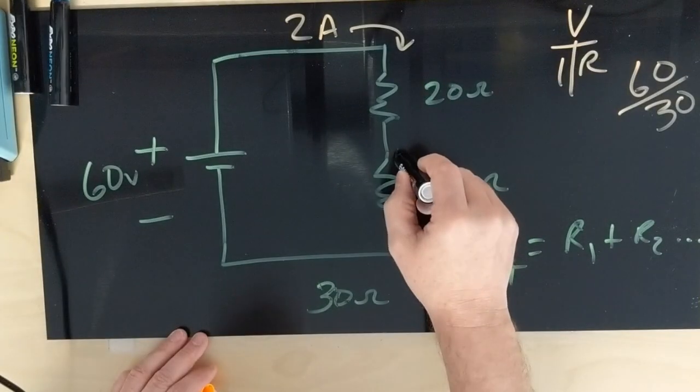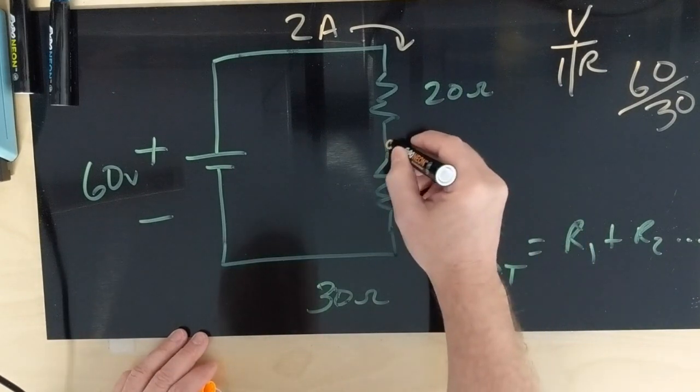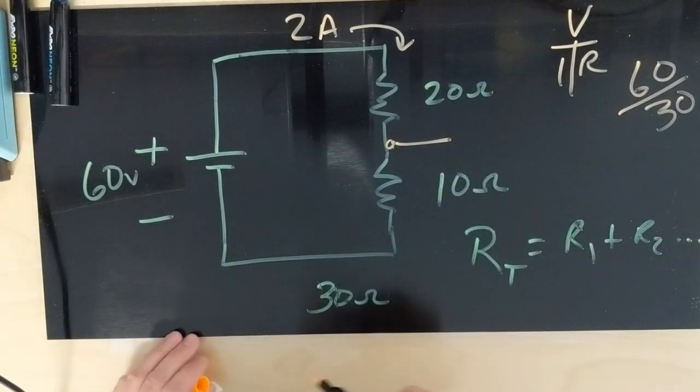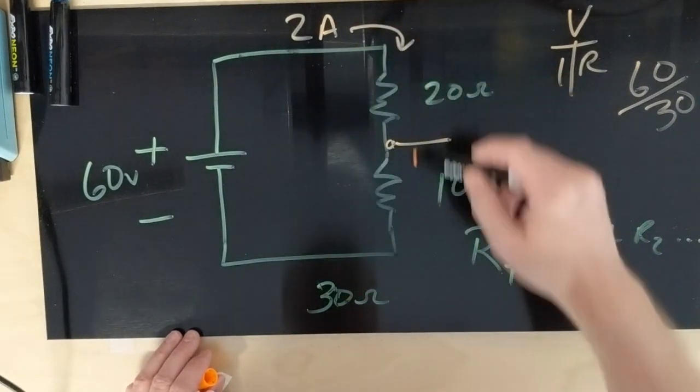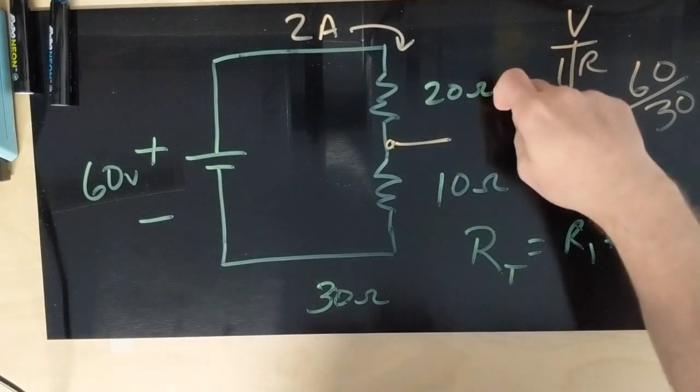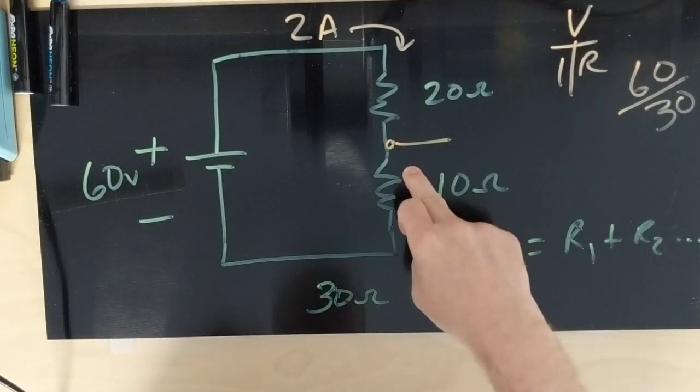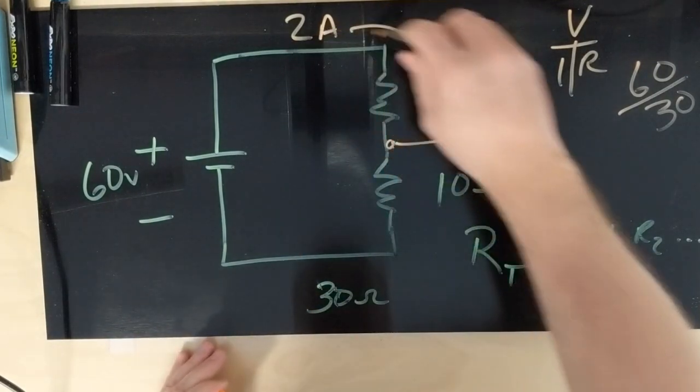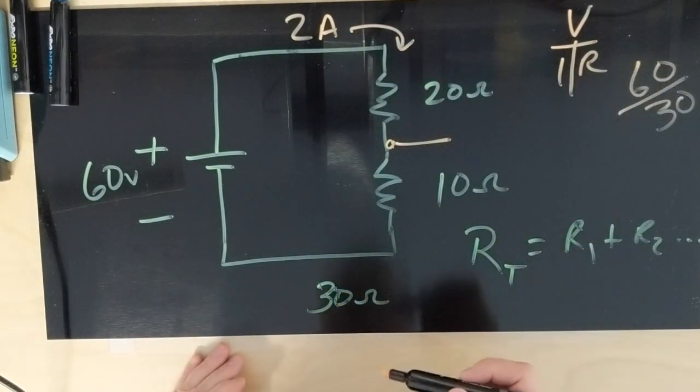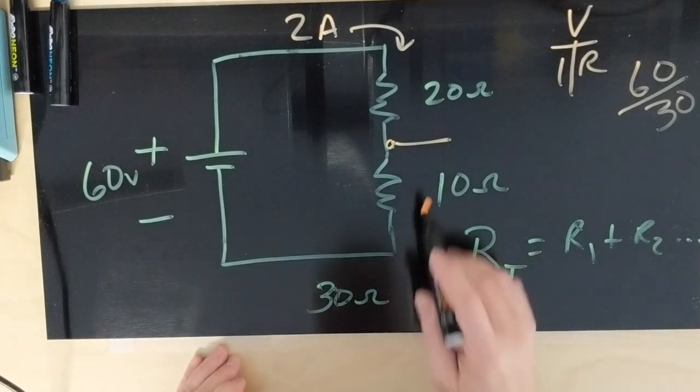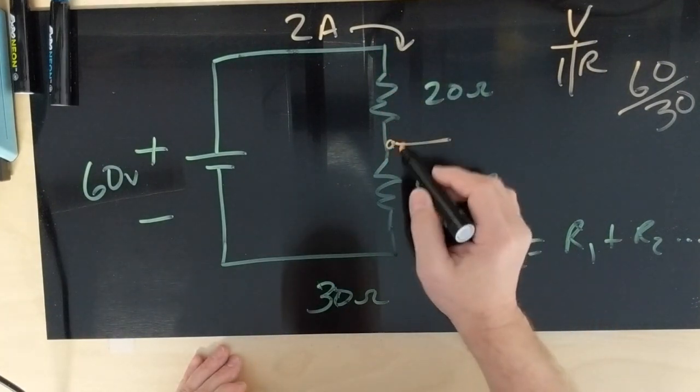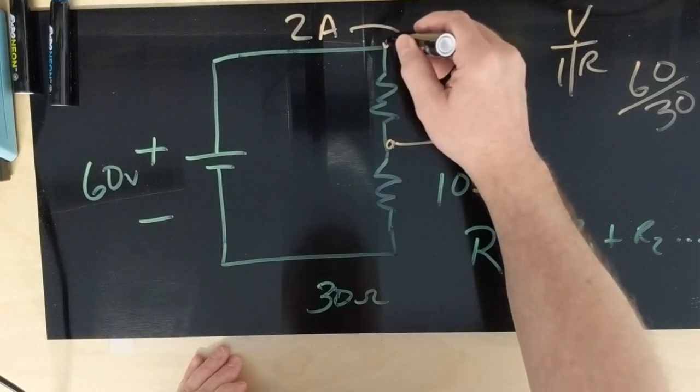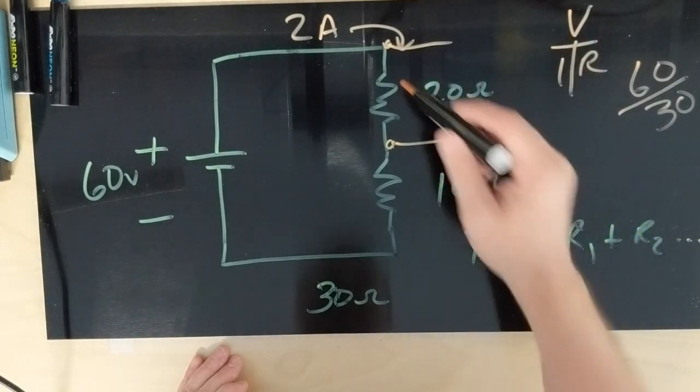60 volts here. What's the voltage at this point? We can calculate what that voltage is because we know it's going to drop. How do we know what the voltage is at this point? Now that we know we have 2 amps going through the circuit, we can use Ohm's law again. We know we have 20 ohms at these two points and we also know there's 2 amps.